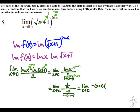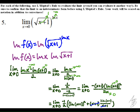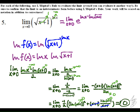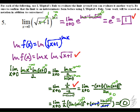Taking the limit of the top and bottom using L'Hôpital's rule, we get an expression that simplifies, but we still have the indeterminate form zero over zero, so we use L'Hôpital's rule again. The derivative of the bottom is just two — that's where the one-half comes from. This evaluates to negative one-half times zero, which is zero, so we get e to the zero power, which is one. Points were given for the final answer, for rewriting the natural log of the function as a product involving the natural log of the square root of x plus one, and for the first use of L'Hôpital's rule.